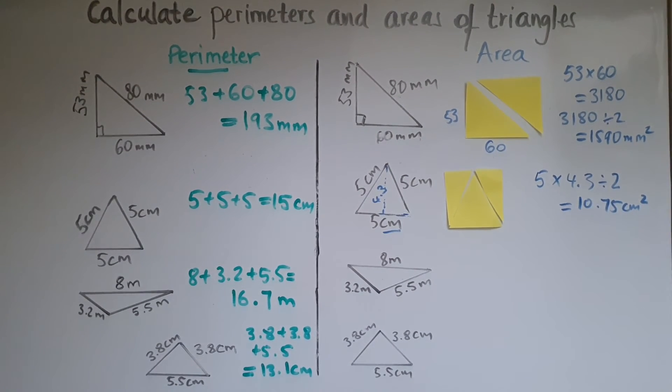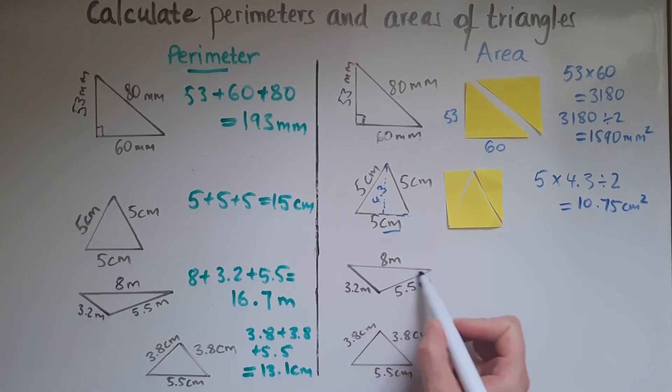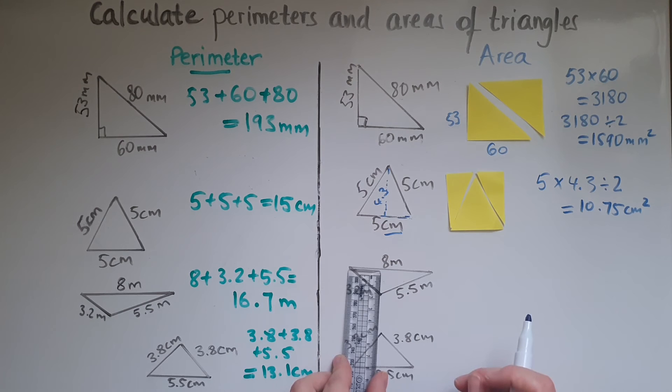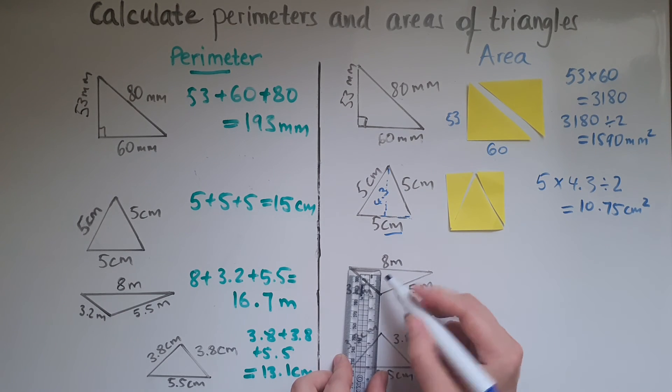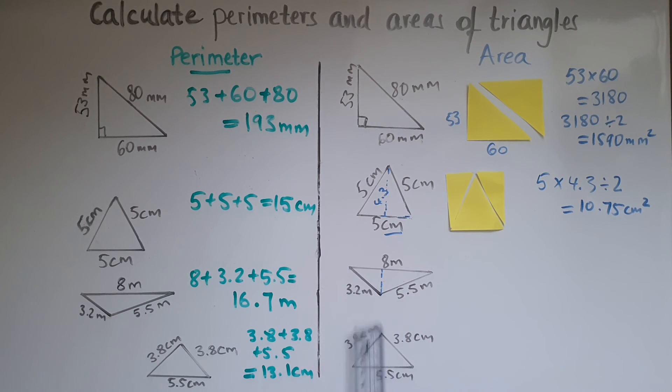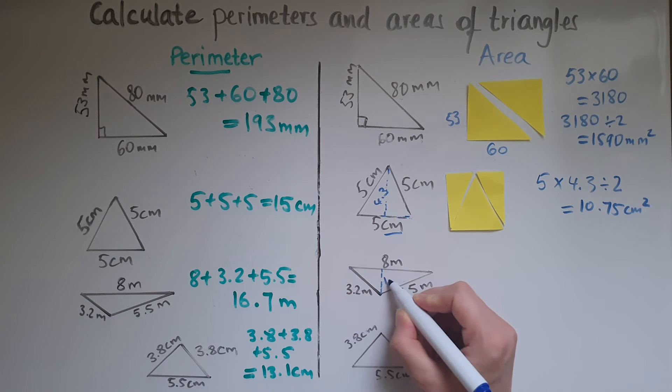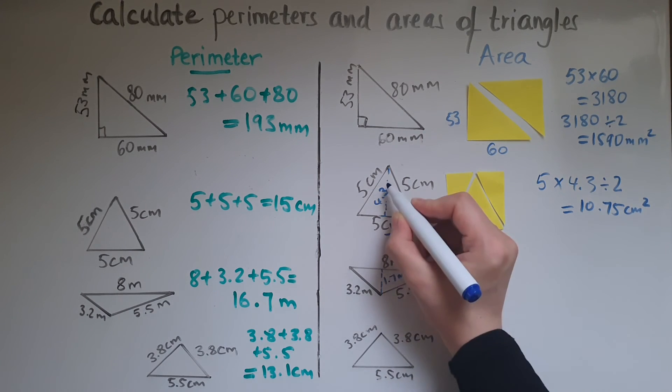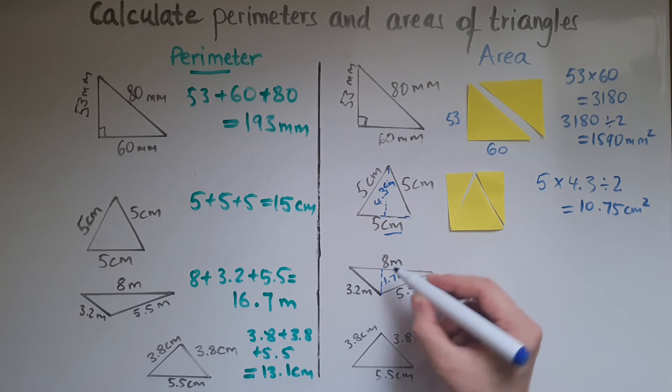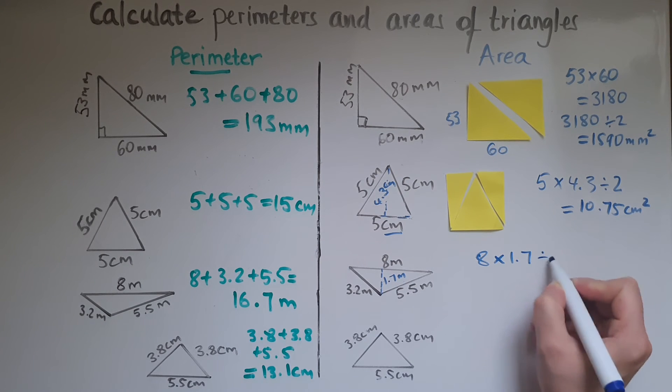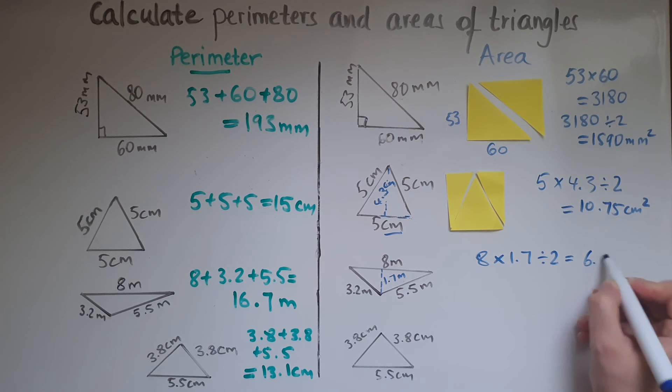Following on with the next triangle. So you've got this as the base, although it's upside down, it does not matter. And we can draw a perpendicular line with the base to make the height. So we measure it using a ruler. And this is approximately 1.7 meters. So I will go 8 times 1.7 divided by 2. That gives us 6.8 meters squared.